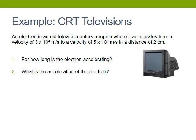Let's look at our first example. We have an old cathode ray television, and in the cathode ray television, electrons are shot forward to make the pretty pictures. We have an electron that accelerates from a velocity of 3 times 10 to the fourth meters per second to a velocity of 5 times 10 to the 6 meters per second, and it does so across 2 centimeters. What we want to know is for how long was it accelerating and what was the acceleration.